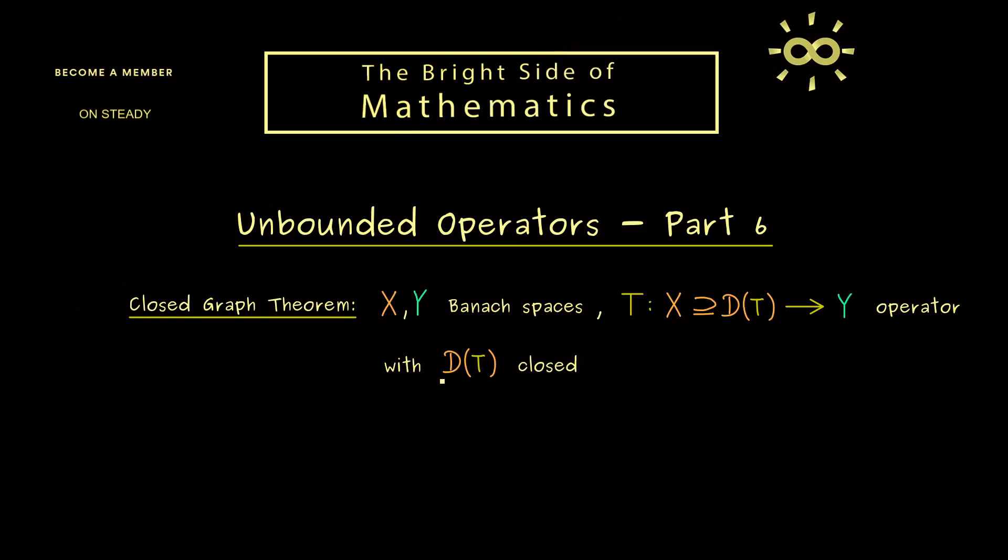In fact this implies that D(T) is a Banach space again. Hence you could also rewrite this assumption and say that D(T) is exactly the space X. So it's exactly the same thing. What we want is that the domain of our operator is a Banach space. Because then we have a very nice equivalence for the terms we have already introduced.